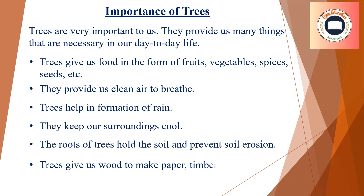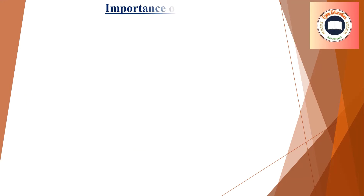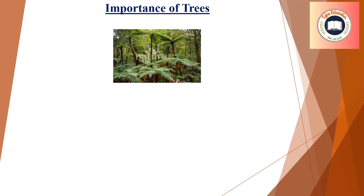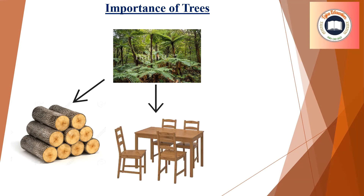Trees give us wood to make paper, timber to make furniture, windows and doors, and firewood for fuel, etc. From this diagram, we can understand that trees provide us with timber, furniture, and firewood.